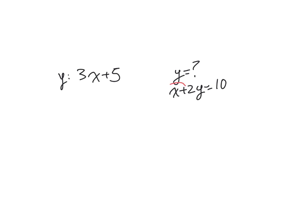In this case, you see this x here, we're going to move it over to this side. So we end up with 2y is equal to 10 minus x.